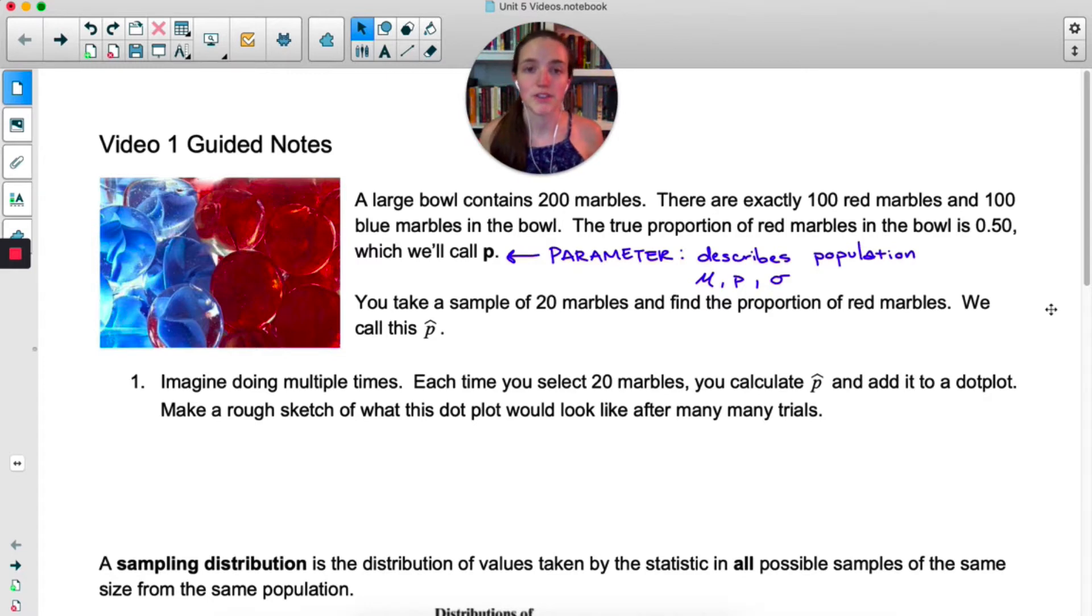Now you are going to take a sample of 20 marbles and find the proportion of red in your sample of 20. And whatever proportion you get, we call that p hat. Now this is not a parameter, this is called a statistic. Once again, not a new vocab word. A statistic is anything that describes the sample.